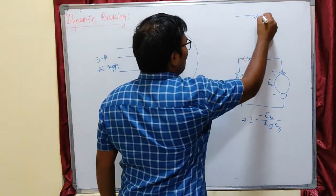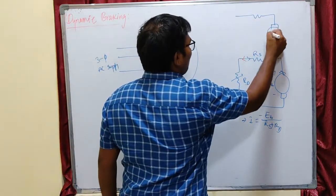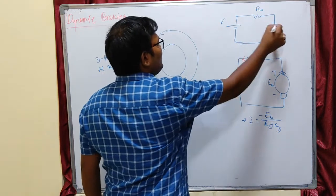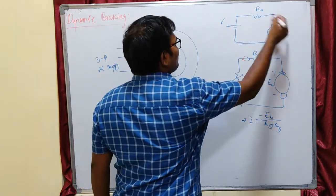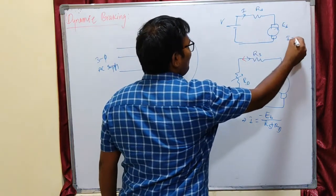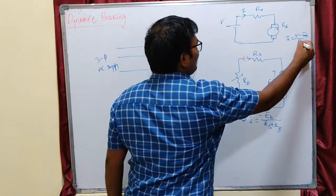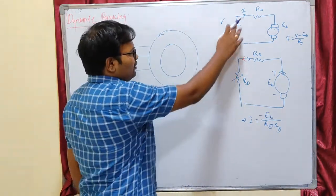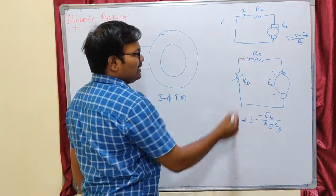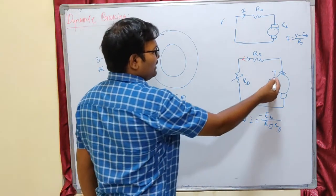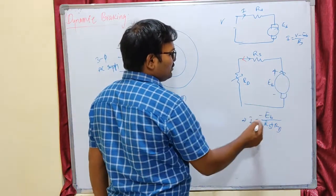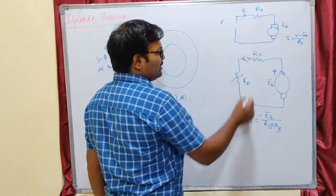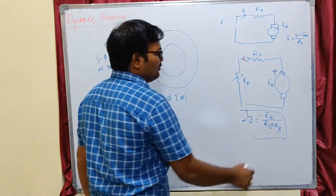Initially, the current direction was like this. This is the DC motor, this is the DC supply, this is R, and this is Eb. Current I will be like this — this is under motoring condition, where I equals V minus Eb divided by Rs. On dynamic braking, the source is replaced with dynamic resistance Rd. The direction of current will now be reversed; Eb becomes the source and current equals Eb divided by Rs plus Rd.